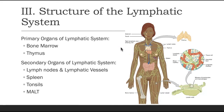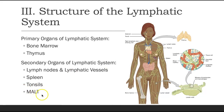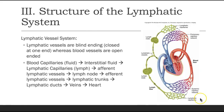Secondary lymphoid organs include the lymph nodes, lymphatic vessels, the spleen found in the upper left quadrant of the abdomen, the tonsils in the nasopharynx and oral cavity, and MALT — mucosa-associated lymphoid tissue — which we find throughout the mucosa of the body and cannot be distinguished in one specific place.